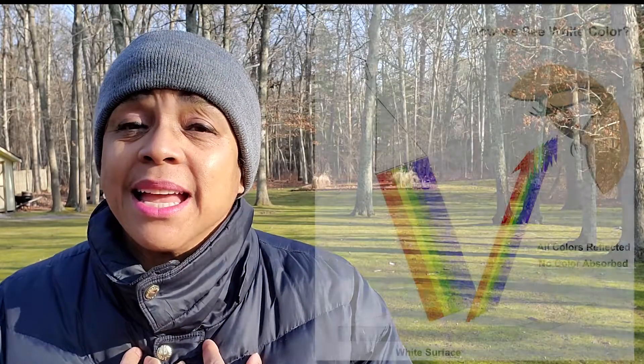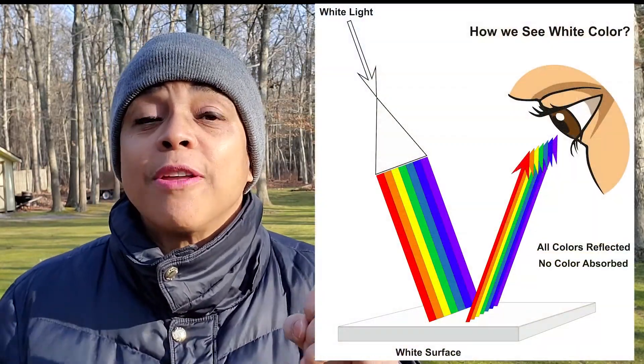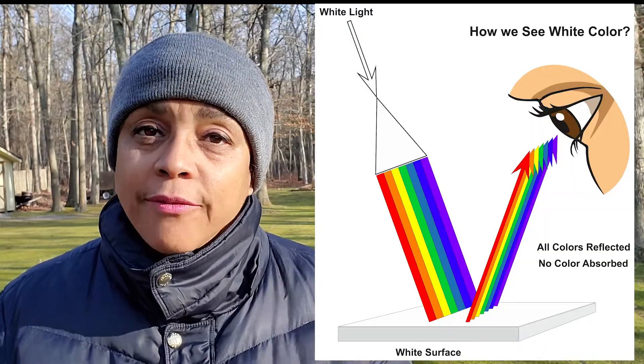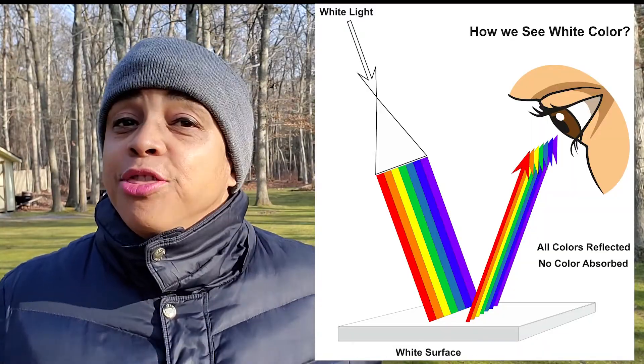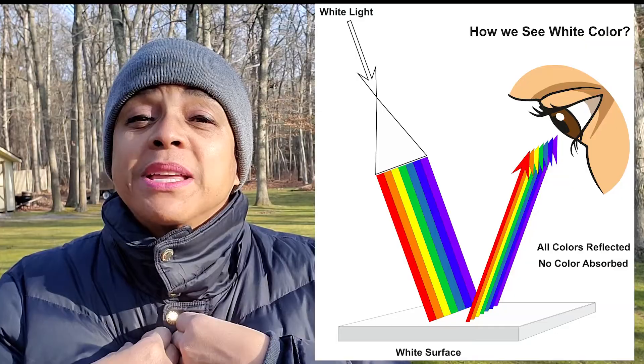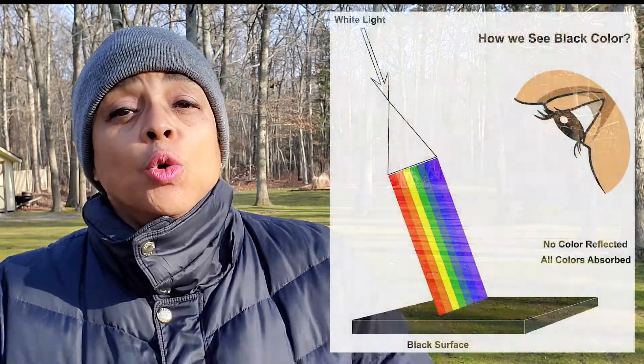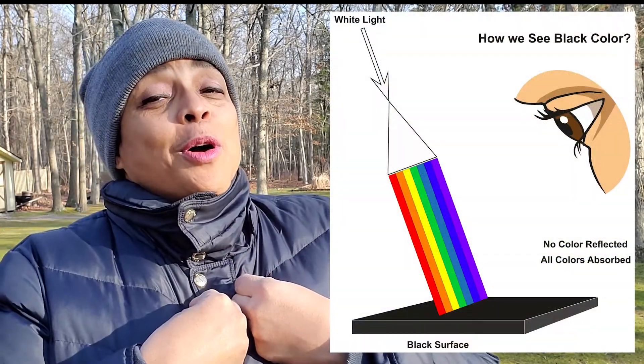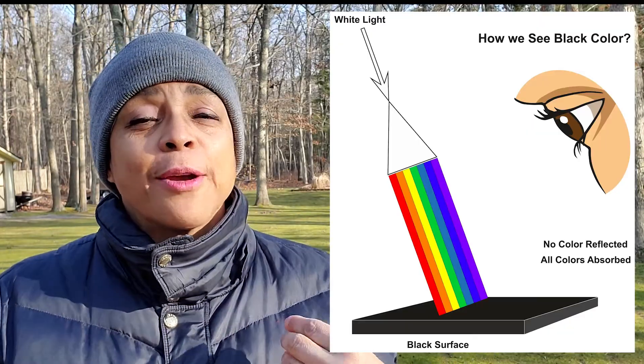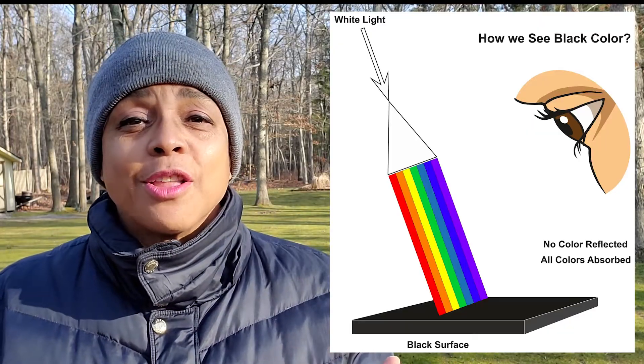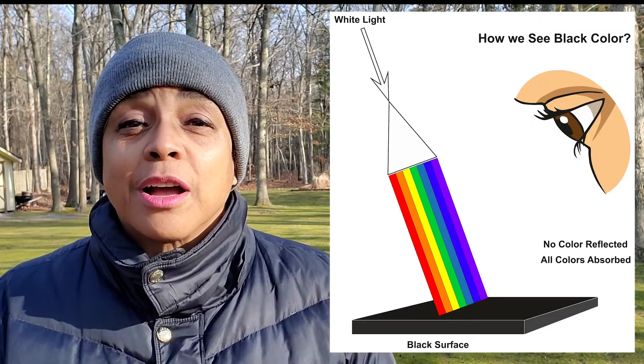So let's talk about the colors black and white. The color white is white because it reflected all of the colors of the rainbow — no color was absorbed. So couldn't we say that white is the absence of color and not black? Because black absorbs all the colors of the rainbow, very little is given off, and therefore we have the color black.